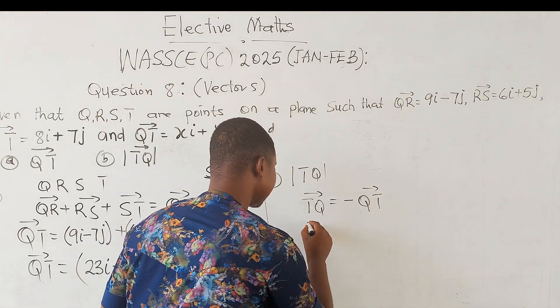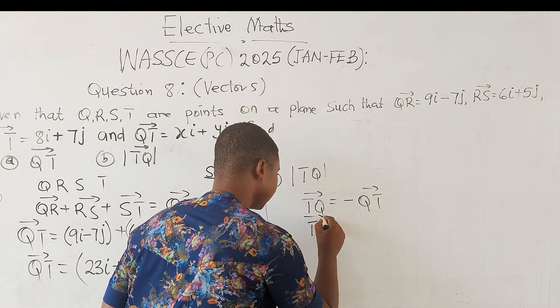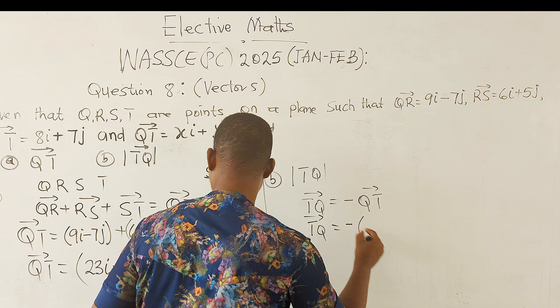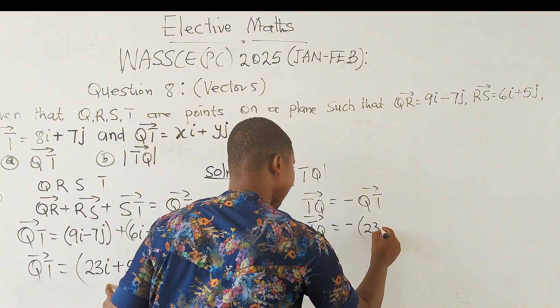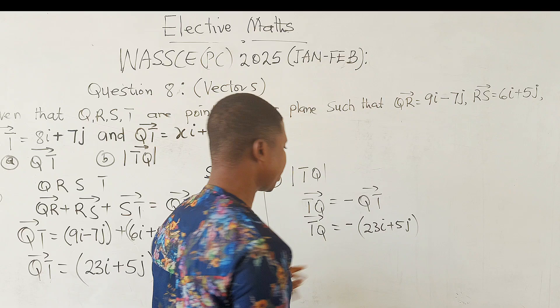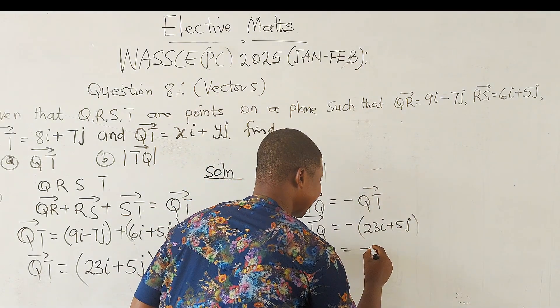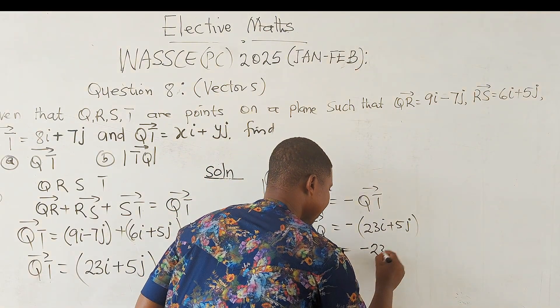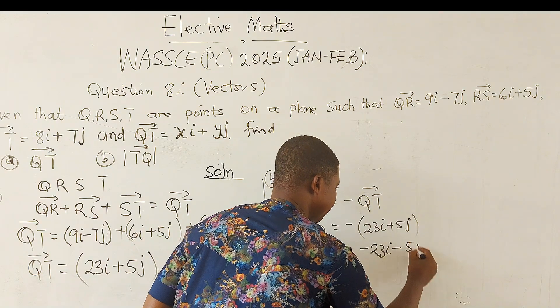So with this, we can say that TQ is equal to negative of (23i + 5j). So the minus will affect both of them, giving you -23i - 5j.